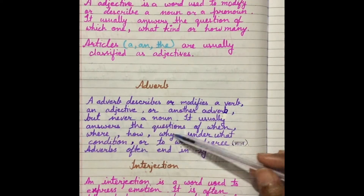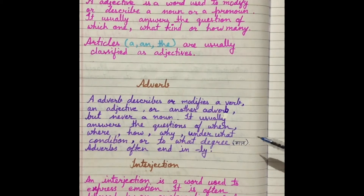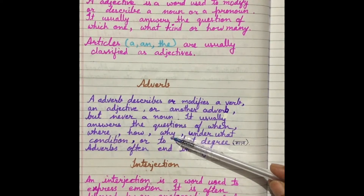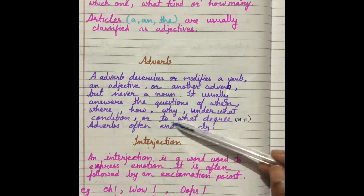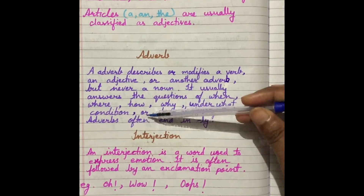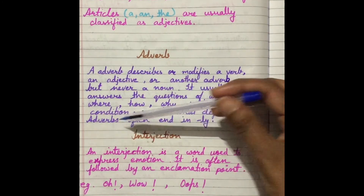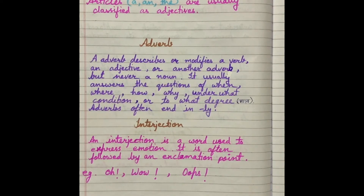An adverb usually answers the questions of when, where, how, why, under what condition, or to what degree. Adverbs often end in '-ly' — not always, but mostly. Jo adverbs hoti hain woh '-ly' par end hoti hain. Like: fastly, slowly, softly.